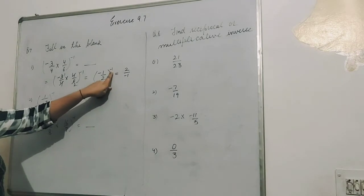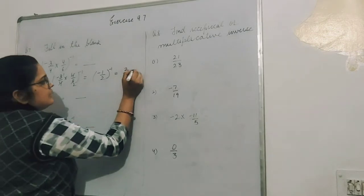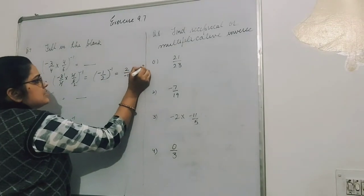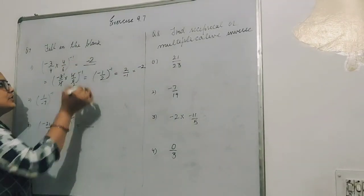You see, 2 upon minus 1 is not standard form. Standard form is when numerator has the negative sign. Minus 2 is your answer.